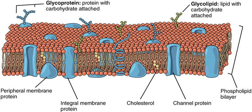For all cells, membrane fluidity is important for many reasons. It enables membrane proteins to diffuse rapidly in the plane of the bilayer and to interact with one another, as is crucial in cell signaling. It permits membrane lipids and proteins to diffuse from sites where they are inserted into the bilayer after their synthesis to other regions of the cell. It allows membranes to fuse with one another and mix their molecules, and it ensures that membrane molecules are distributed evenly between daughter cells when a cell divides. If biological membranes were not fluid, it is hard to imagine how cells could live, grow, and reproduce.